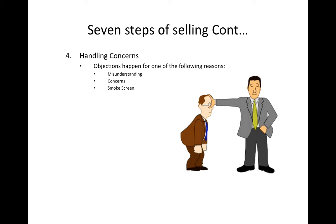'I need to talk to my partner' — that's a smokescreen. So how do you handle it? There's a five-step process. Step number one: neutralize. Let's say the customer says 'It's too expensive, I don't want to spend that much money.' You say something like 'I understand your point' — you're trying to neutralize and disarm the customer so you can have a dialogue. You then confirm if that is the only concern they have today.